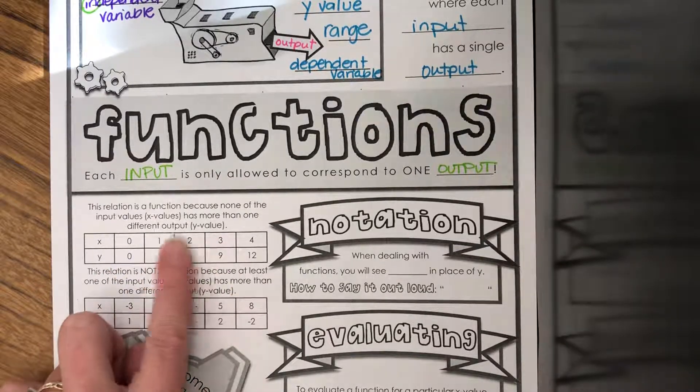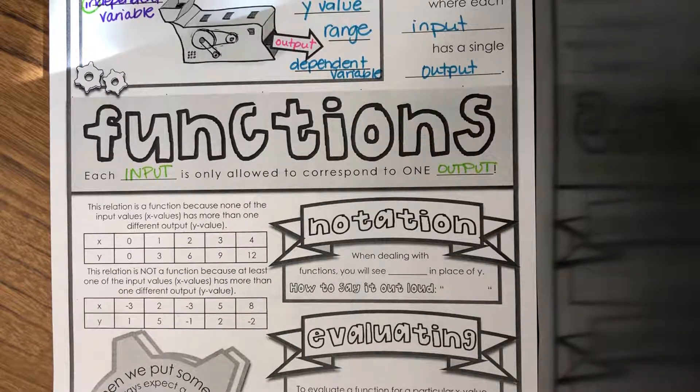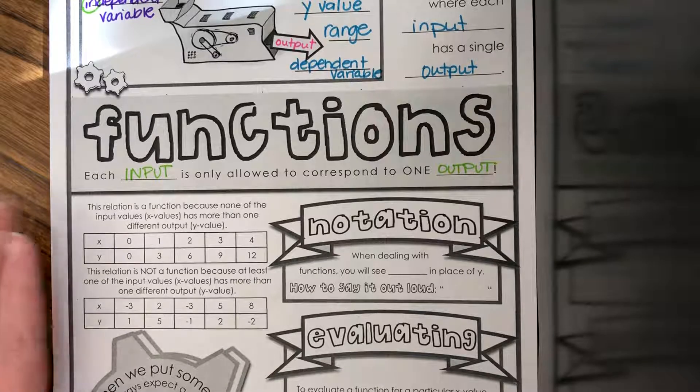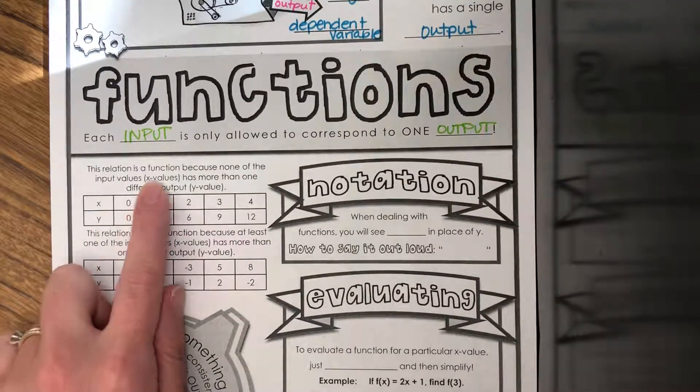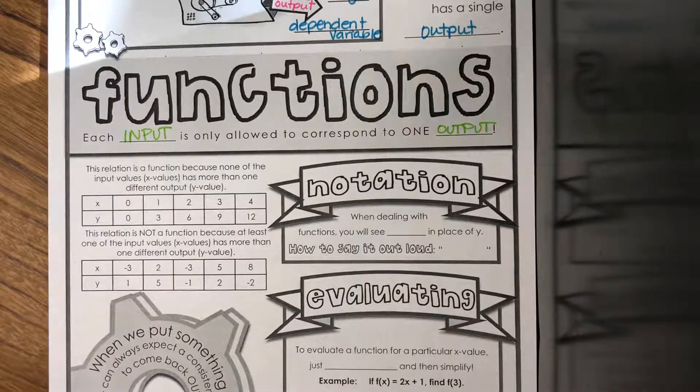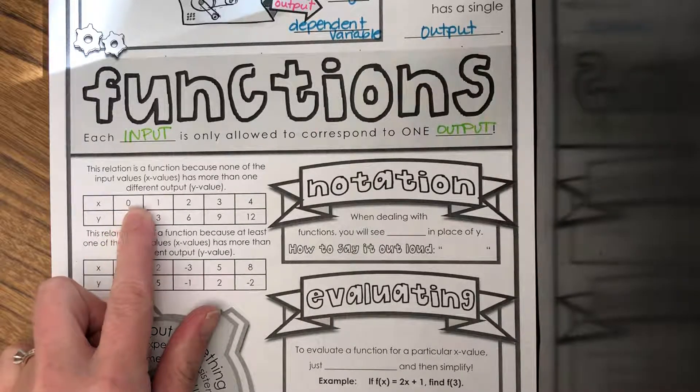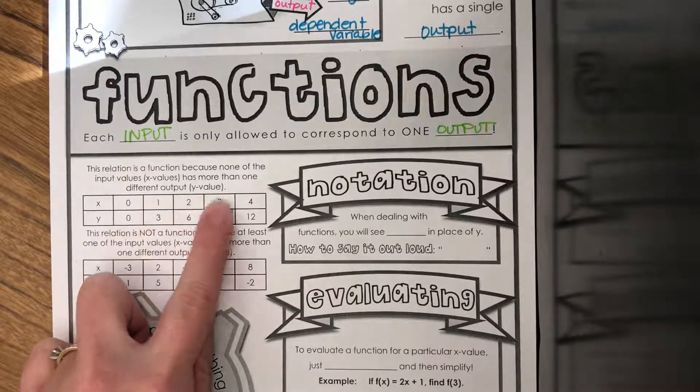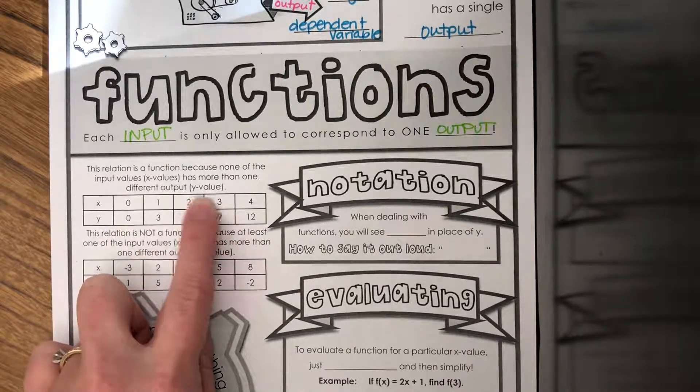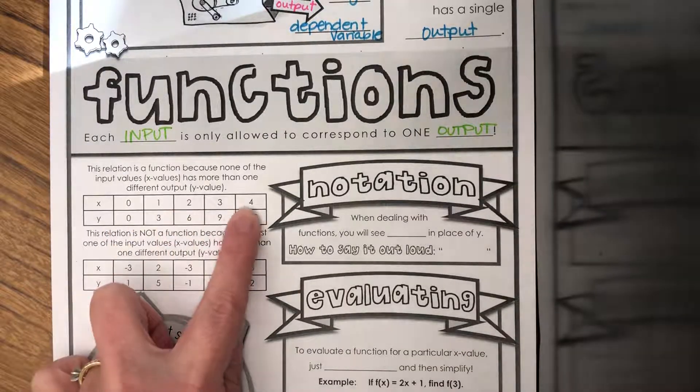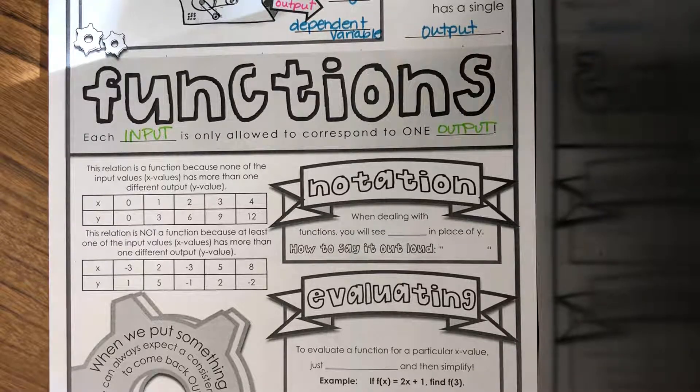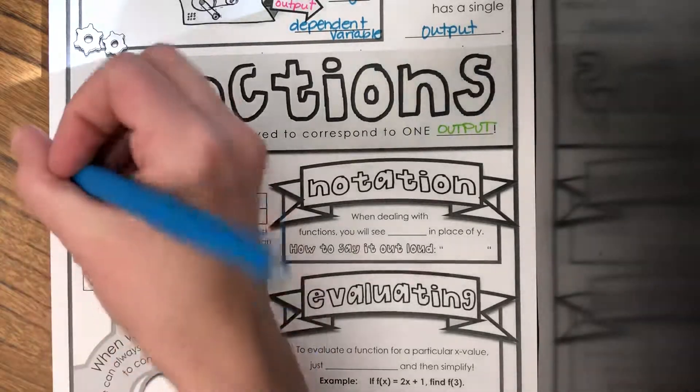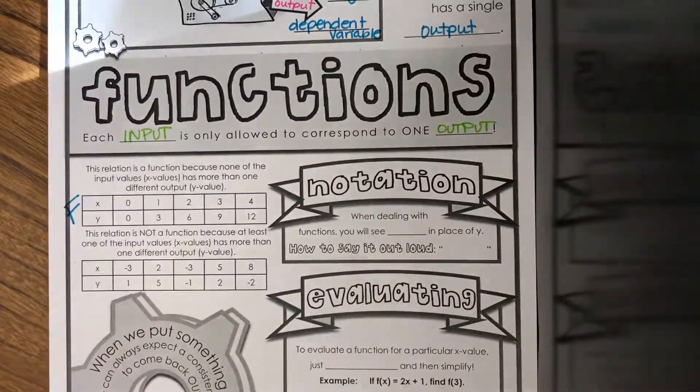Let's relate it to math. To have a function, for something to be a function, the X value cannot be repeated. So let's look at these two examples. This first one is a function because none of the X values have more than one different Y value. None of these X values are repeated, therefore it's a function.